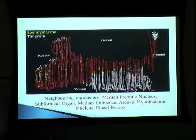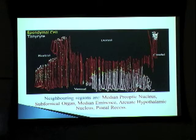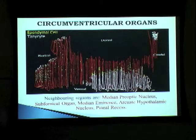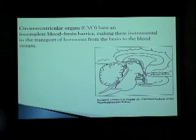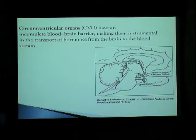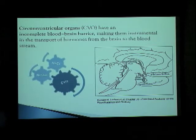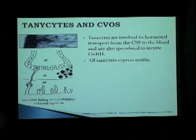So we took a look at the neighboring regions along the third ventricle, and we observed that these regions include the median preoptic nucleus, the subfornical organ, and the median eminence. Basically, there is something very common linking these areas together — all these regions are circumventricular organs. Circumventricular organs have an incomplete blood-brain barrier, which makes them instrumental in the transport of hormones from the brain to the blood. So what this tells us is that nestin-expressing cells always seem to co-localize in CVO regions — is there a link? This seems to suggest that there is some sort of underlying factor.